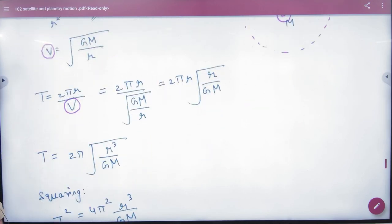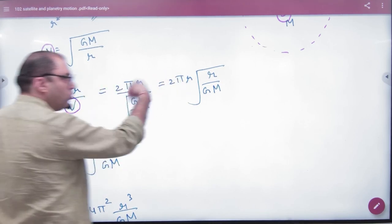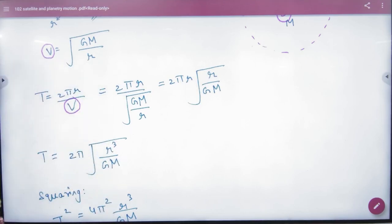So time period - time equals distance over velocity. What is the distance? 2πr. What is the velocity? The orbital velocity is under root of GM by r. We take the reciprocal of this term. If r is under root, then r squared times r gives r cubed.